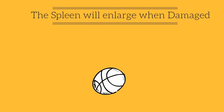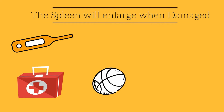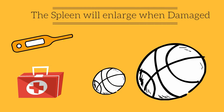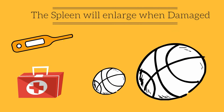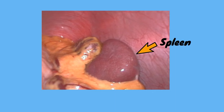When damaged or when you are fighting a series of infections like mono, the spleen can enlarge from the size of a softball to the size of a volleyball. It becomes very tender and can be dangerous.